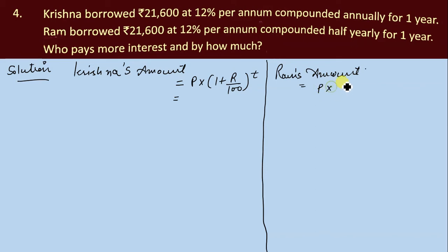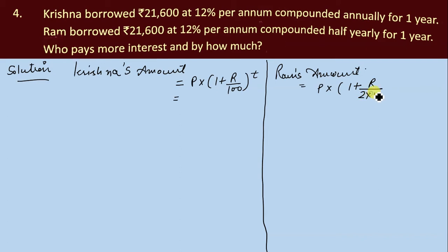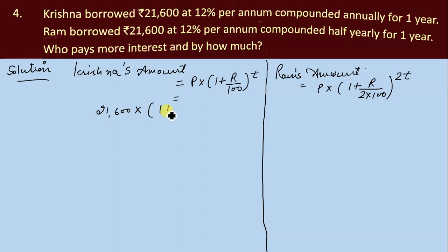For Ram's amount, the formula will change because Ram borrowed compounded half-yearly. The formula becomes P into (1 + R/(2×100)) raised to the power 2T. The principal is 21,600, rate is 12%, and time is 1 year.